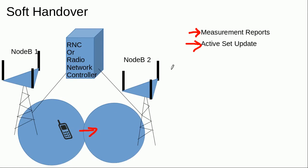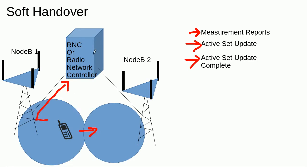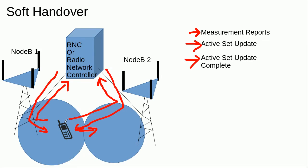Once this mobile station establishes this connection, it would confirm the RNC about the establishment of this connection through an active set update complete message sent from the mobile to the RNC. Once a mobile is connected to two Node Bs, it would be sending the same data from both paths. The RNC can then choose the information with minimum error, as the same information is coming from both paths. Similarly, in the downlink direction, the mobile station combines the two copies of the same information to achieve minimum error.